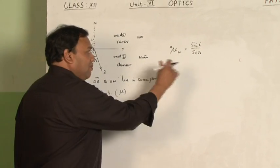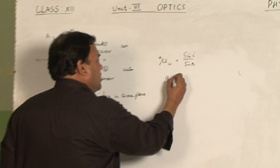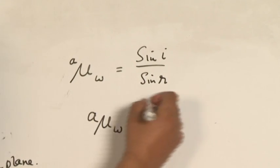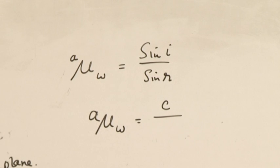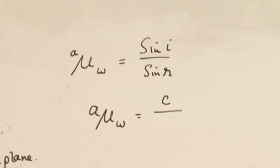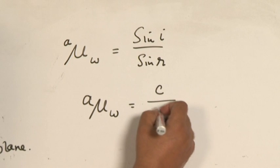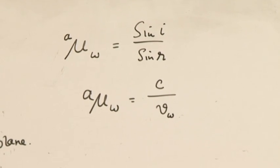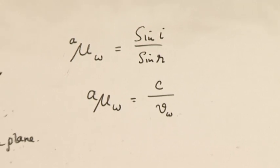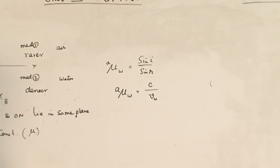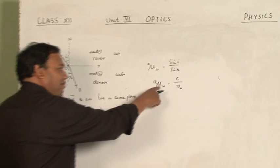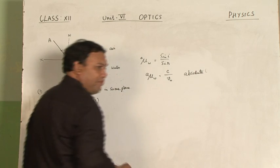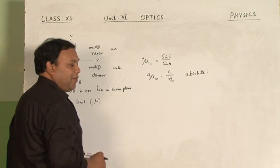Now, in terms of the velocity of light in these two media, we can write the ratio of velocity of light in the first medium to the velocity of light in the second medium. So here C represents the velocity of light in air, and V_w represents the velocity of light in water. This type of refractive index is called the absolute refractive index of that particular medium.